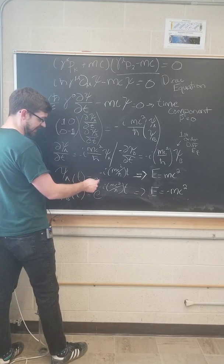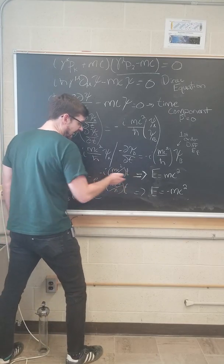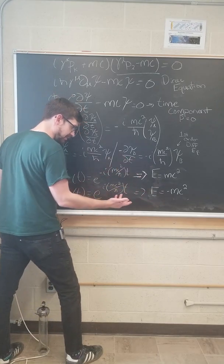They're each going to look like an exponent with minus i mc squared over h bar times t. This looks like the energy eigenvalues applied to some Hamiltonian.